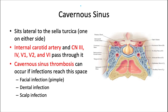The cavernous sinus is an important structure that sits lateral to the sella turcica, with one on either side. Several important structures pass through it: the internal carotid artery, and cranial nerves 3, 4, V1, V2, and 6. The nearby superior orbital fissure transmits cranial nerves 3, 4, V1, and 6, so you only have to add the internal carotid and V2 to that collection to account for everything passing through the cavernous sinus.